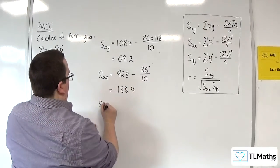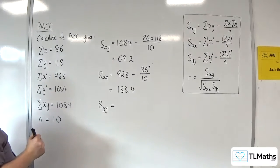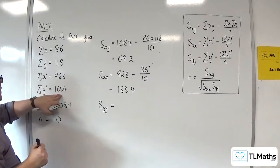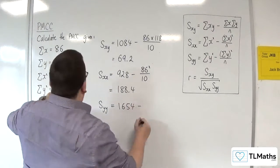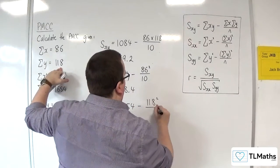And then Syy will be the sum of y squared, 1654, take away the sum of y, 118, squared, divided by n.